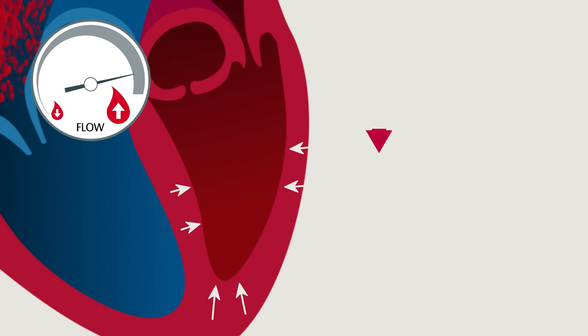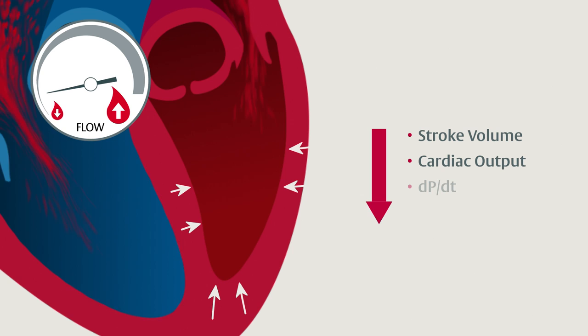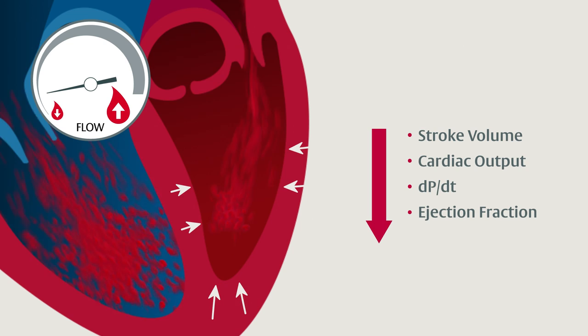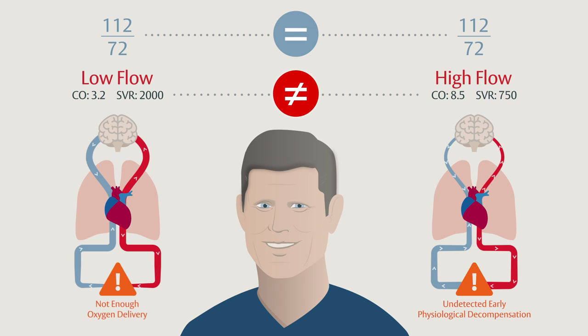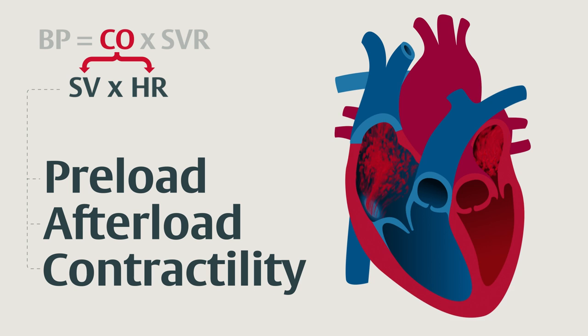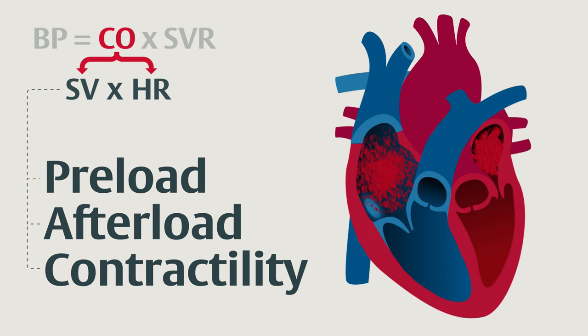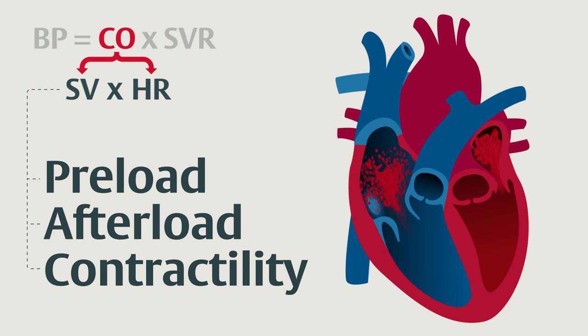Now let's decrease contractility — stroke volume, cardiac output, dP/dT, and ejection fraction are all decreasing. Remember, blood pressure equals cardiac output times systemic vascular resistance. If cardiac output changes for any reason discussed in this video, the SVR may change substantially to compensate. That's why simply measuring blood pressure can make it very difficult to interpret a patient's true hemodynamic state. While the examples in this lesson focus on normal physiology, things like anesthesia, medications, or sepsis may affect a patient's physiologic response, making measuring the determinants of blood pressure and cardiac output even more important.